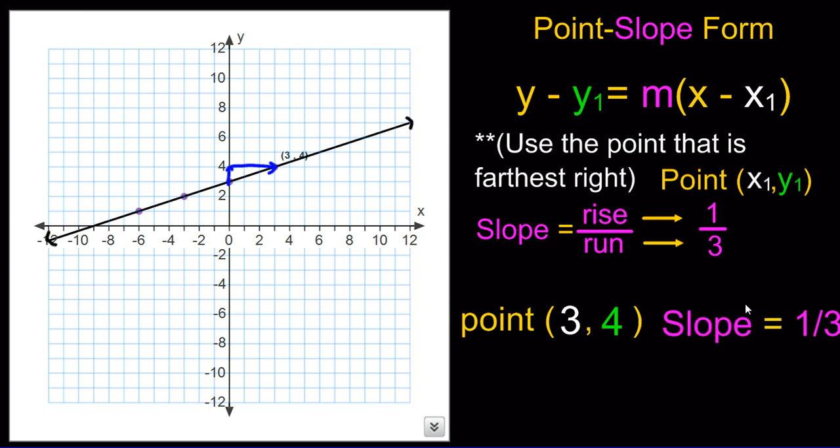Once you have that, now it's just a matter of putting it into the equation. So we rewrite the point-slope form, and now the y1 coordinate goes right here. So the slope goes here, and the x1 coordinate goes right here. Let's try one more.